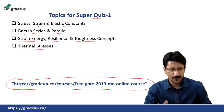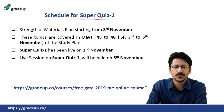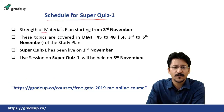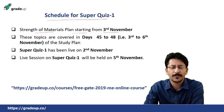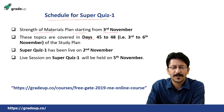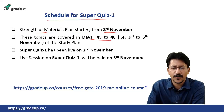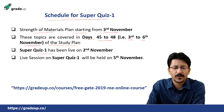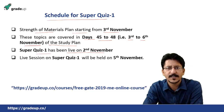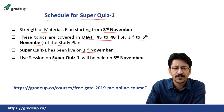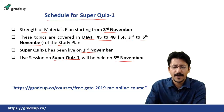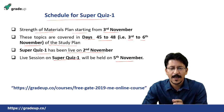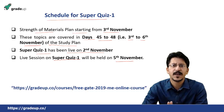The schedule for super quiz one: the Strength of Materials plan starts from 3rd November. These four topics are covered in four days, that is days 45 to 48 of the study plan, covering dates 3rd to 6th November. The super quiz has been live today, 2nd November, and the live session for this super quiz will be held on 5th November.